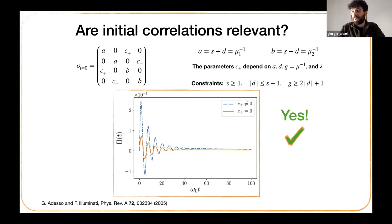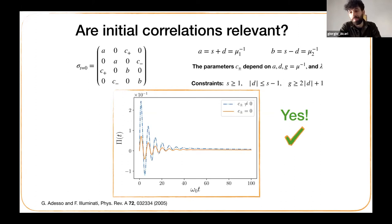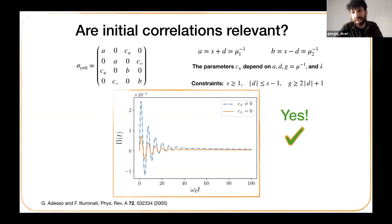We can now answer the initial question: are initial correlations relevant? The answer is yes. Comparing two cases — one with correlations between the two modes and one where correlations are forcefully removed — we see that whenever C+ and C− are nonzero, we get a higher peak in the entropy production rate. Since we are dealing with non-Markovian dynamics, we also observe oscillating behavior, and locally the entropy production rate can become negative.